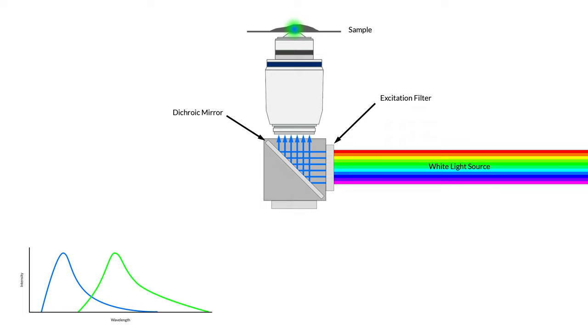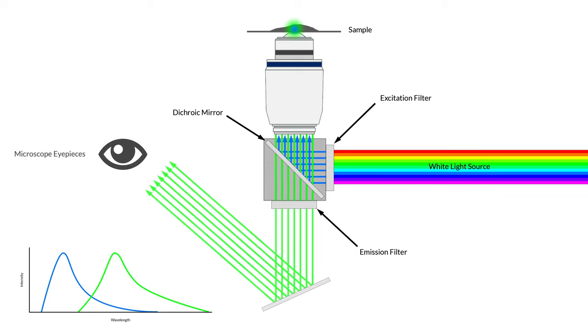This longer wavelength emission light is collected by the objective and makes its way back to the dichroic. Now because the range of the signal emitted is longer than 500 nanometers, it will transmit directly through. Once the emission light transmits through the dichroic, it will encounter an emission filter, which much like the excitation filter is a bandpass filter. The emission light is then directed to the eyepieces of the microscope or even to a camera to detect the fluorescence image.